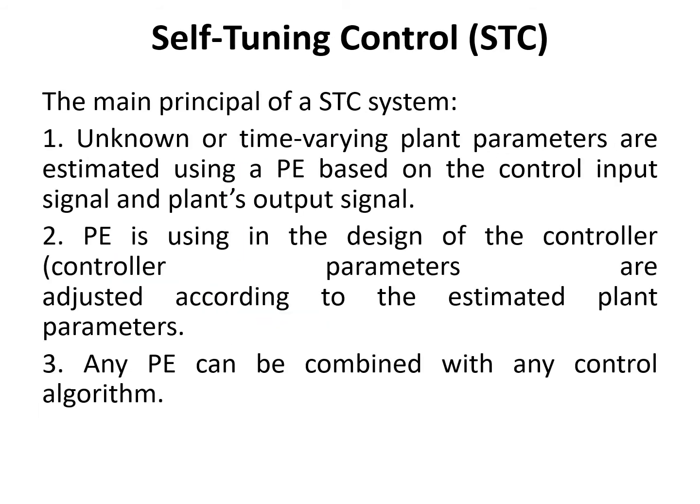The following are the main principles of a STC system. Number one: plant parameters which are unknown or time varying are estimated using a parameter estimator based on the control input signal UT and plant output signal YT. The estimated parameters are used in the design of the controller parameters via the controller design algorithm module. In other words, the controller parameters are adjusted according to the estimated plant parameters. Any parameter estimator algorithm can be combined with any control algorithm, resulting in STC being a more flexible and powerful design.